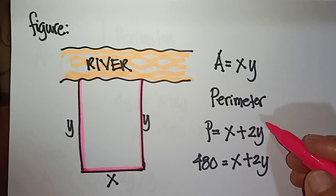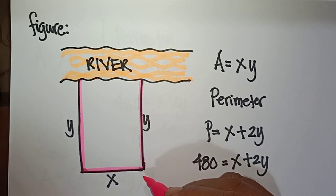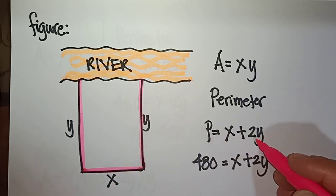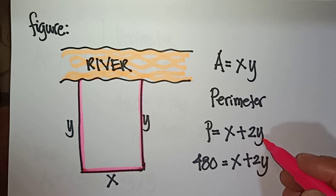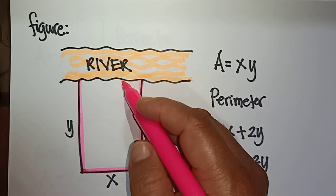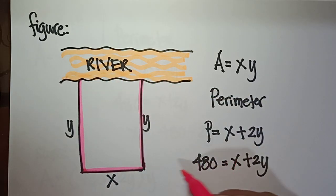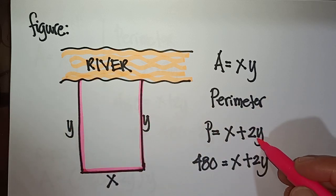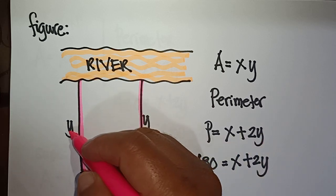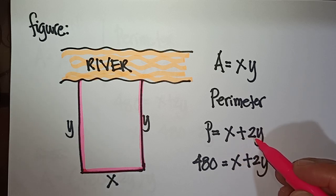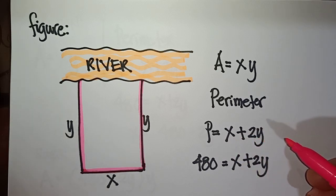The perimeter formula for this three-sided fence is x plus 2y. We have only one x because the other side is along the river, so we consider only that one side. The two remaining sides are both y, giving us perimeter = x + 2y.